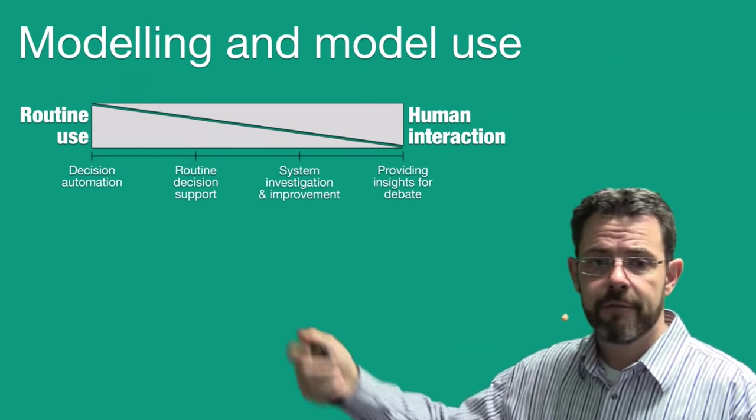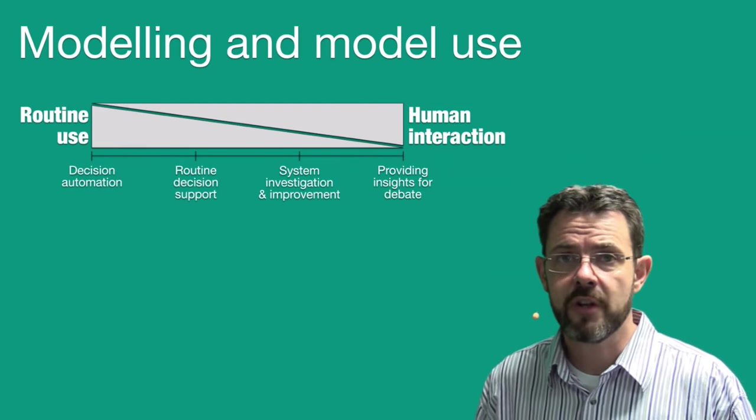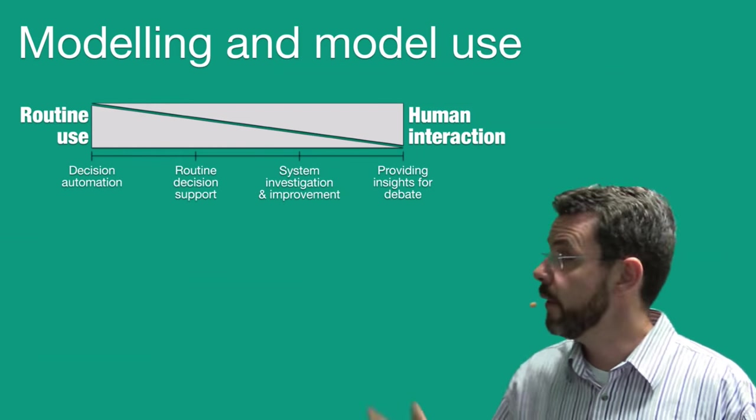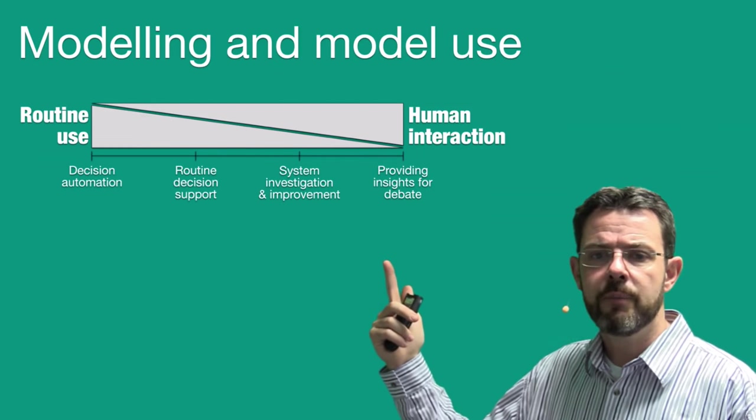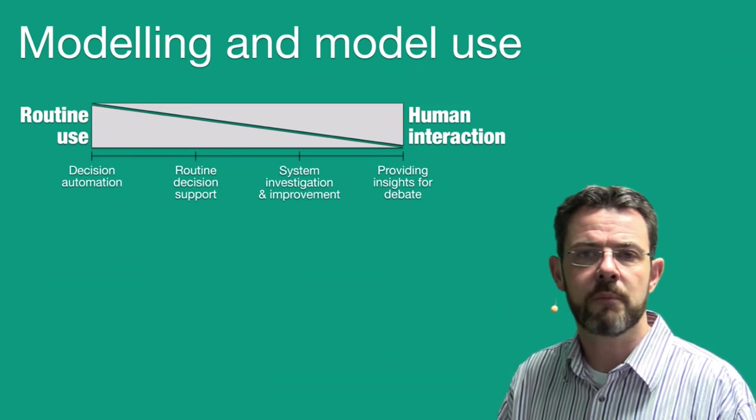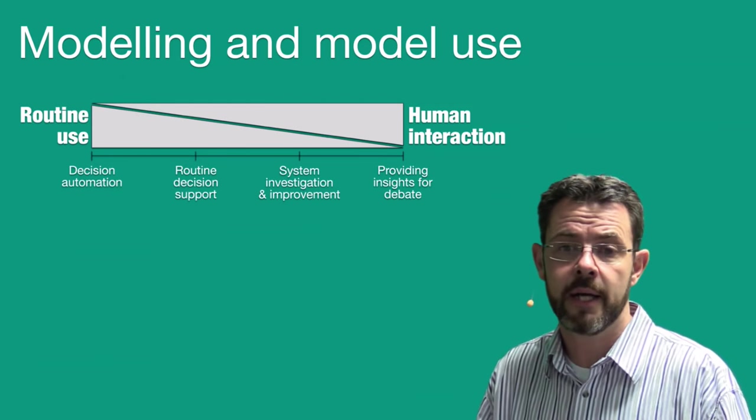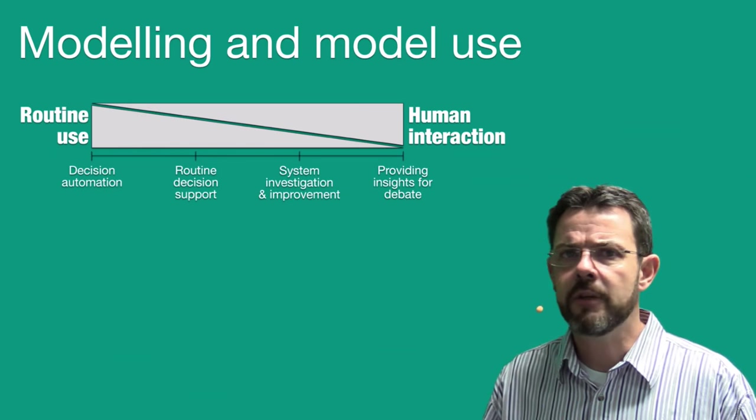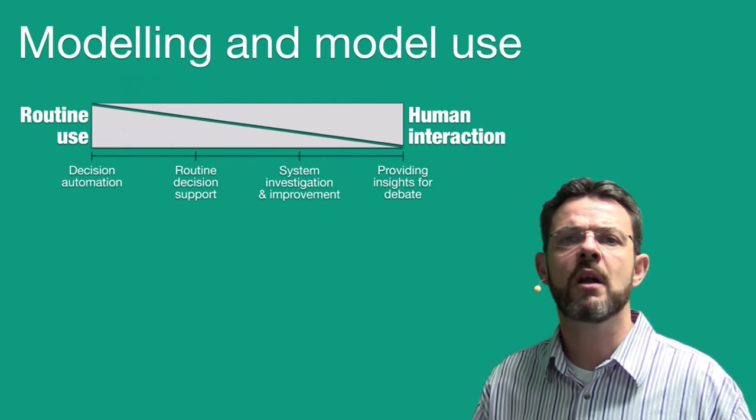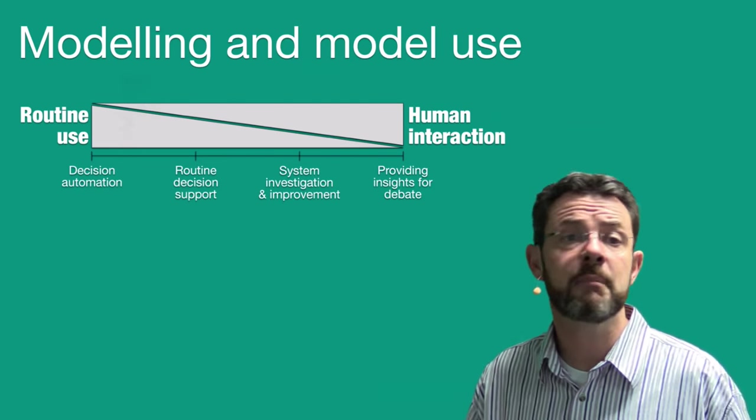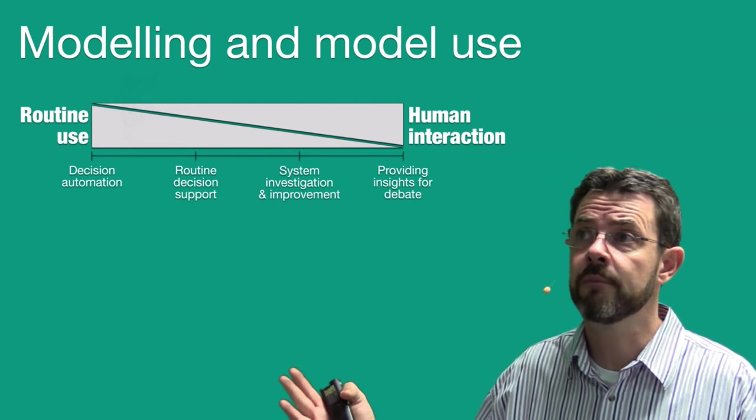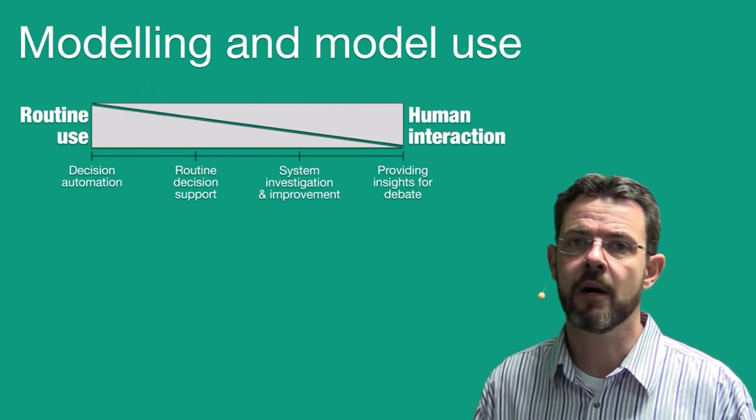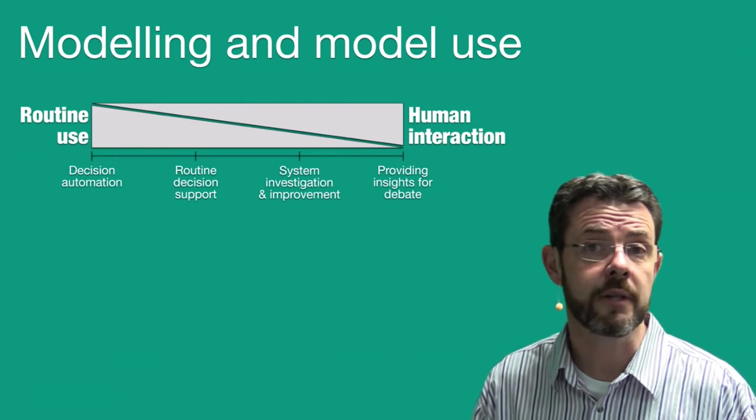And on the far right-hand side, you have decision automation. Those are decisions that are made completely autonomously. And then on this right-hand extreme, you provide insight for debate. So you build models. It's mainly human interaction or human intervention. But it's not automated. It's something that's kind of a once-off discussion. It might be something like discussing what the impact of minibus taxi subsidies would be on transport and affordability.